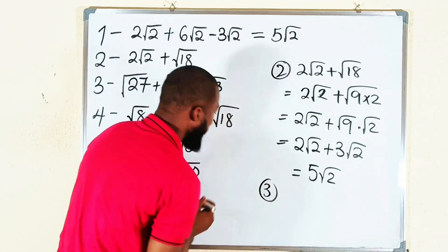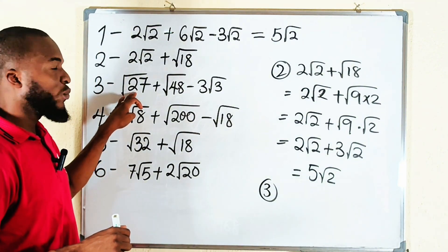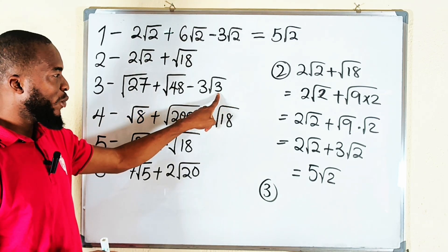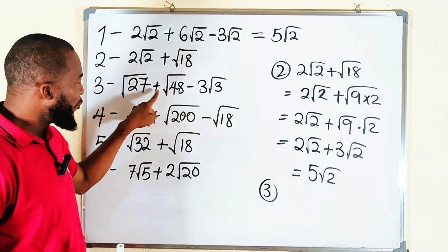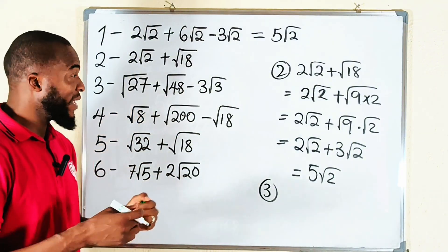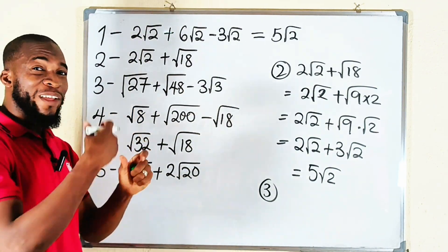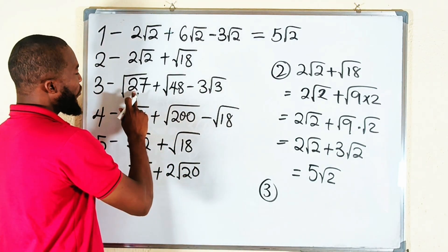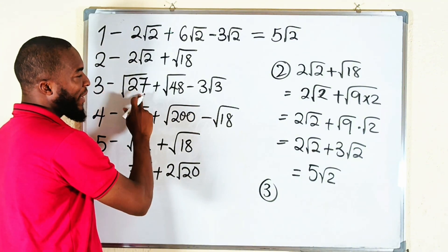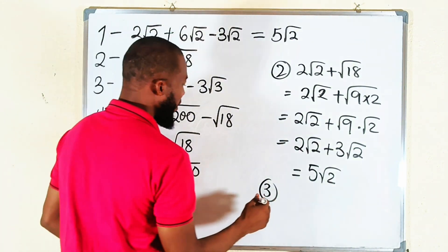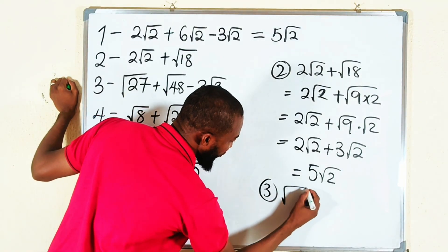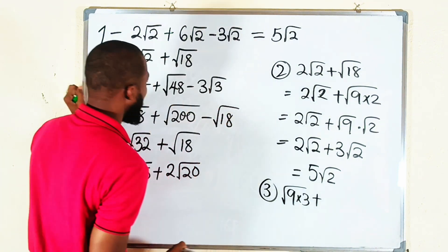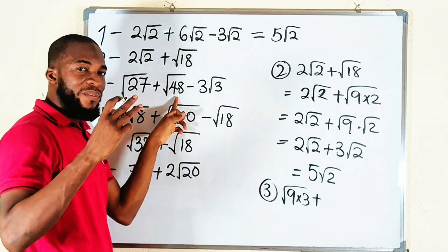Number three: we have square root of 27, plus square root of 48, minus three times square root of three. Three is the smallest prime number here, so we break these numbers in terms of three, making sure the other factor is always a perfect square. 27 can be written as 3 multiplied by 9, and 9 is a perfect square. So square root of 27 is square root of 9 multiplied by 3, plus square root of 48 which equals square root of 16 times 3.